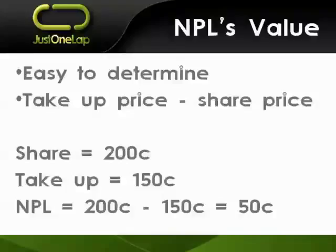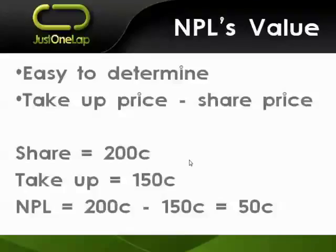Remember earlier I said it looks like a bargain — you can buy a 2 rand share at 1 rand 50. Well, if you received the nil paid letters, yes you can. You had the share at 2 rand, you're given the right to buy more shares at 1 rand 50. Often what you will see though is the share price will actually come off a bit. If you don't have the nil paid, you have to go buy them in the market at 50 cents, then buy the share at 1 rand 50 — that equals 2 rand, which is the current price. So it's only going to benefit the people who were holding and received that nil paid letter.